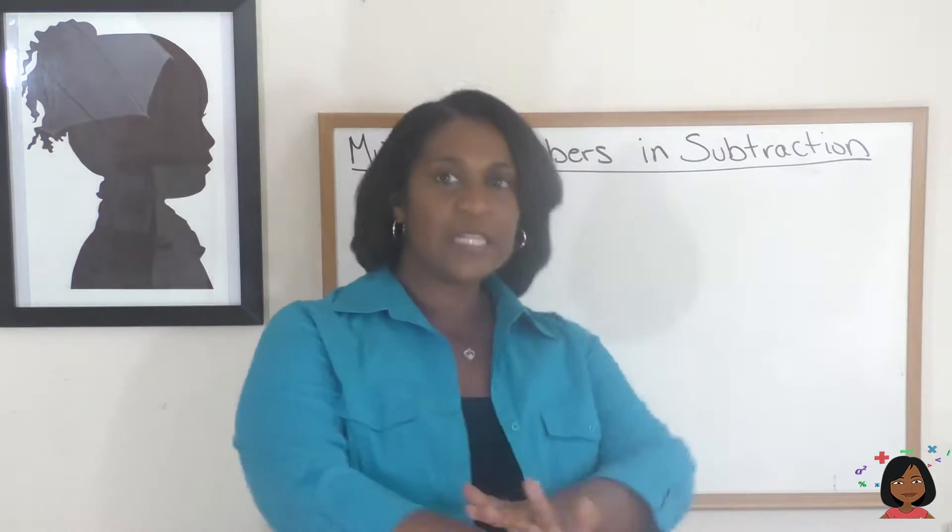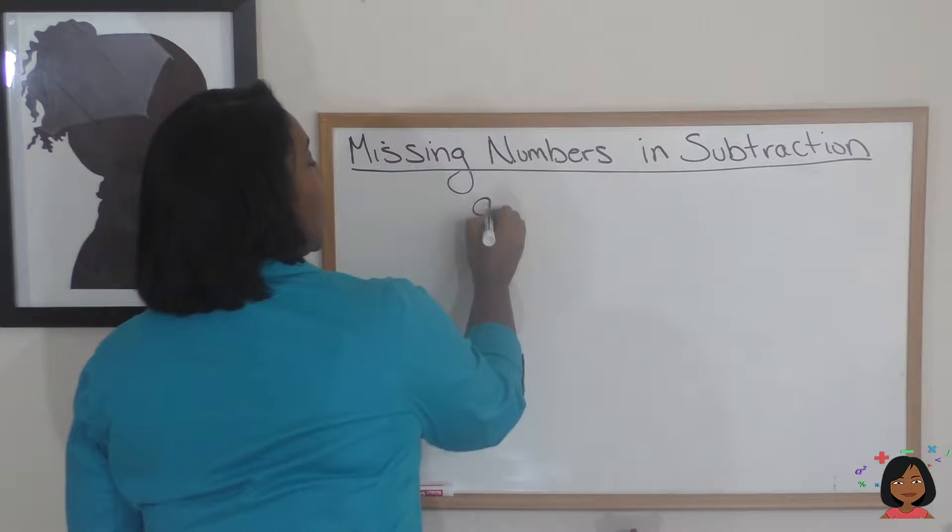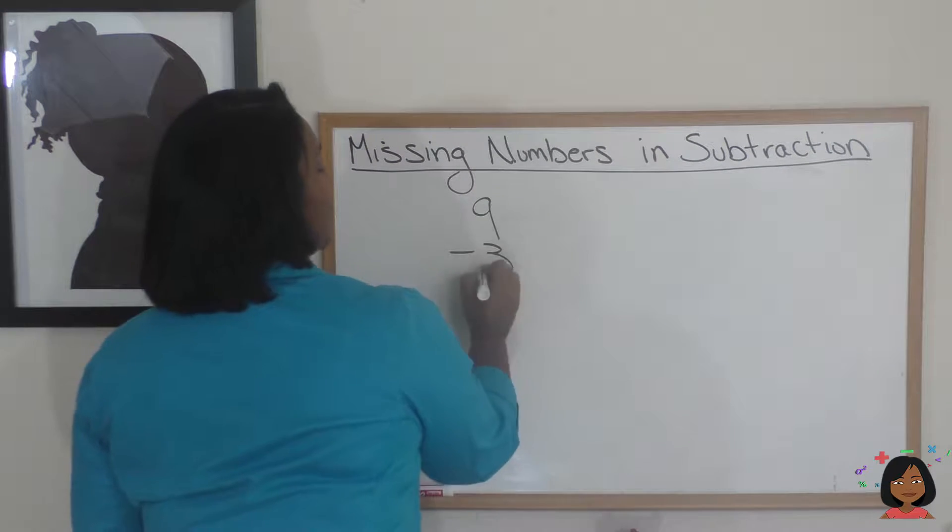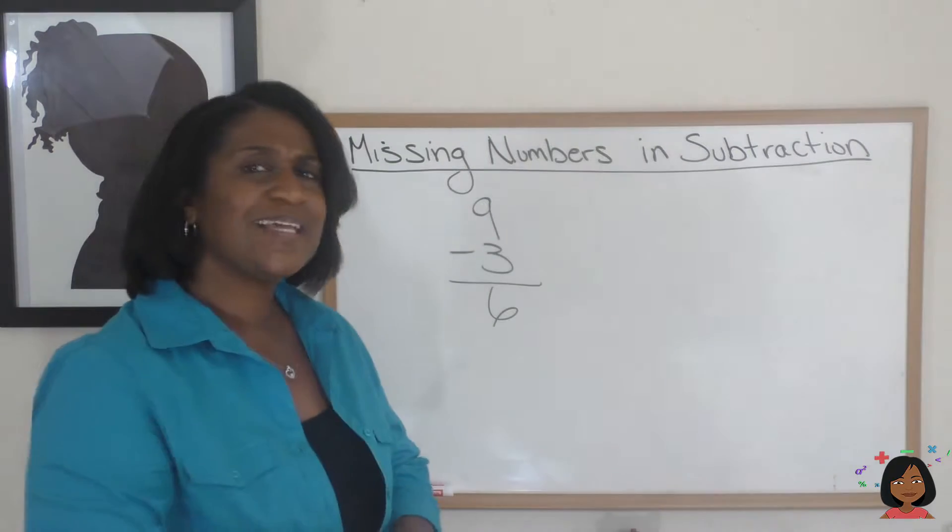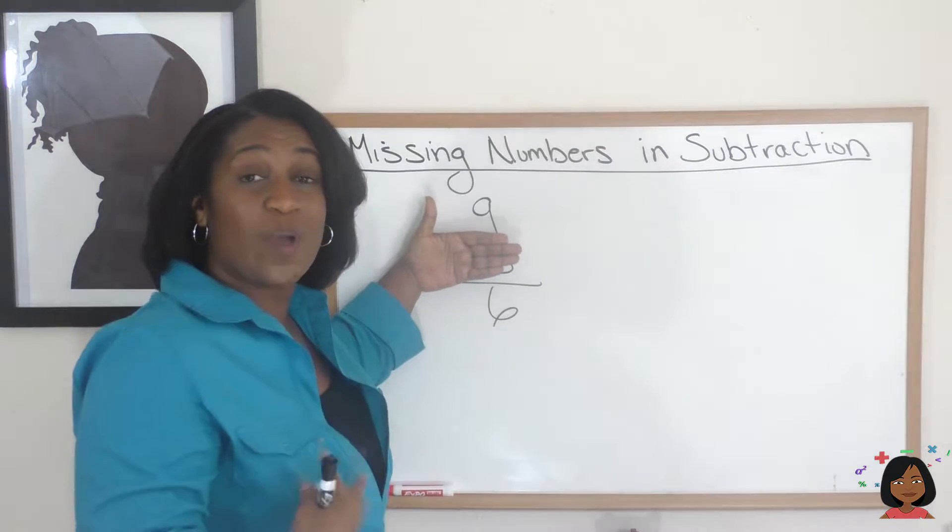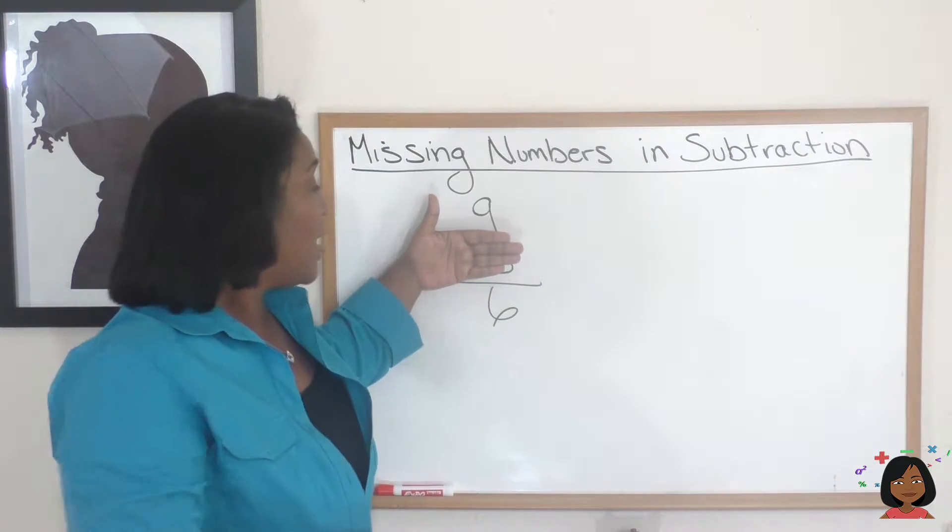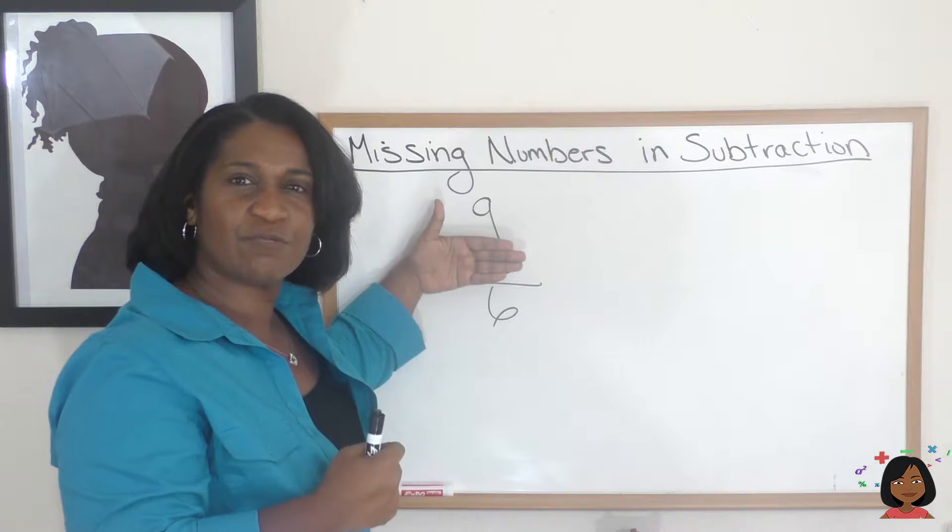Let's give a really easy example to start things off. Let's say we had the number 9 minus 3, and it gives us 6. But let's say I covered up the 3, and that was my missing number, and I wanted to find out the 3. And I have the numbers 9 and 6. Is there a way I'd be able to figure out this 3?